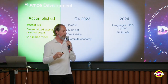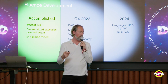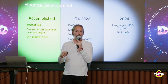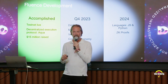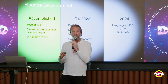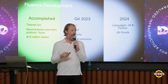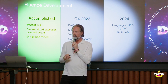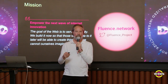Where are we and what have we done so far? Testnet is live. The decentralized execution protocol, Aqua, is written and functioning — some people here have used it and played with it. 2023 is a big year. Fluence has been around since 2017, building for a long time, and has raised $15 million over that period. This year we're going to launch mainnet, scheduled for Q4, with verifiability and the compute economy going live. In early 2024, we're adding a couple of languages and also ZK proofs.